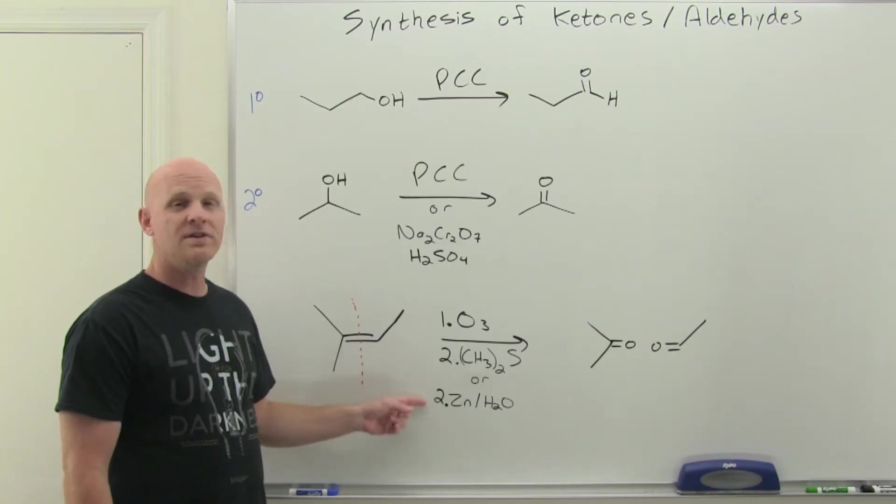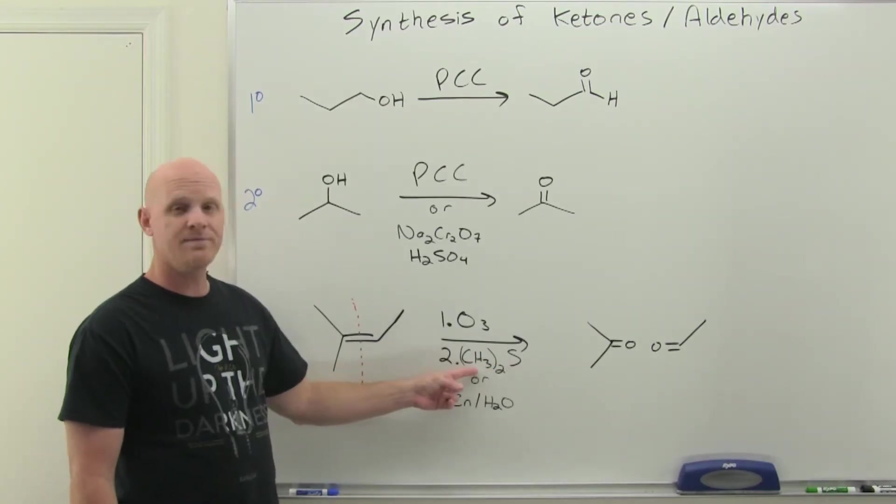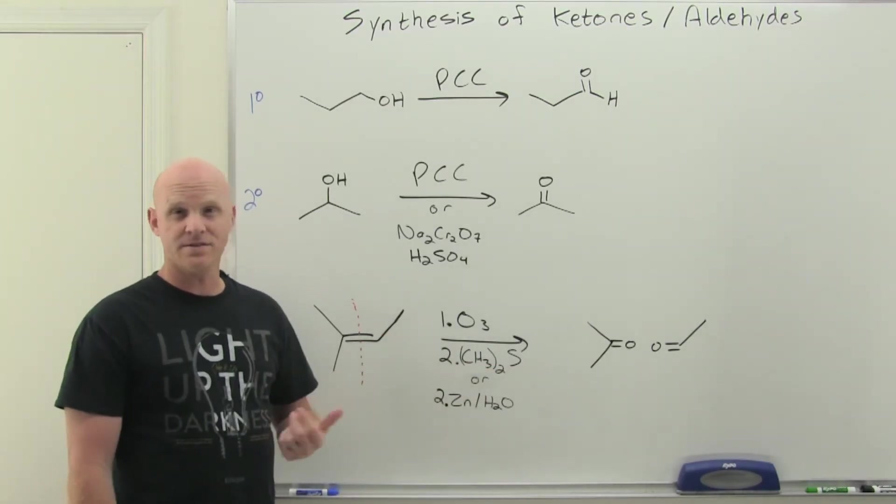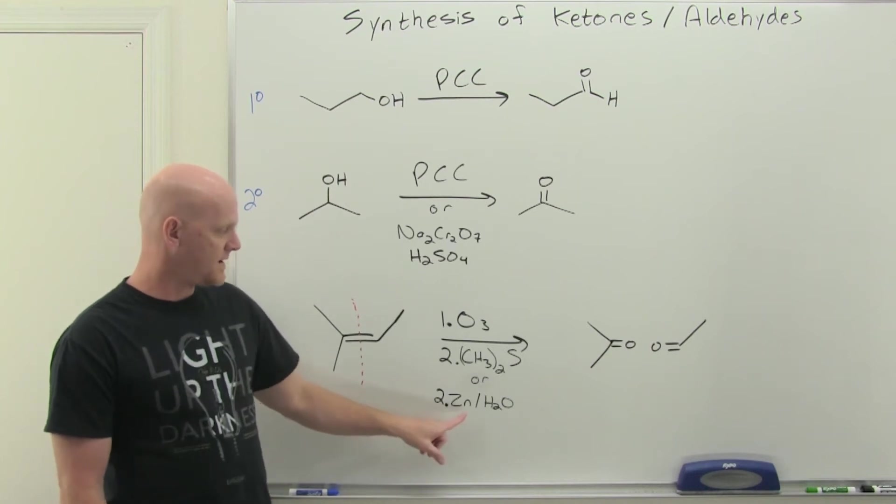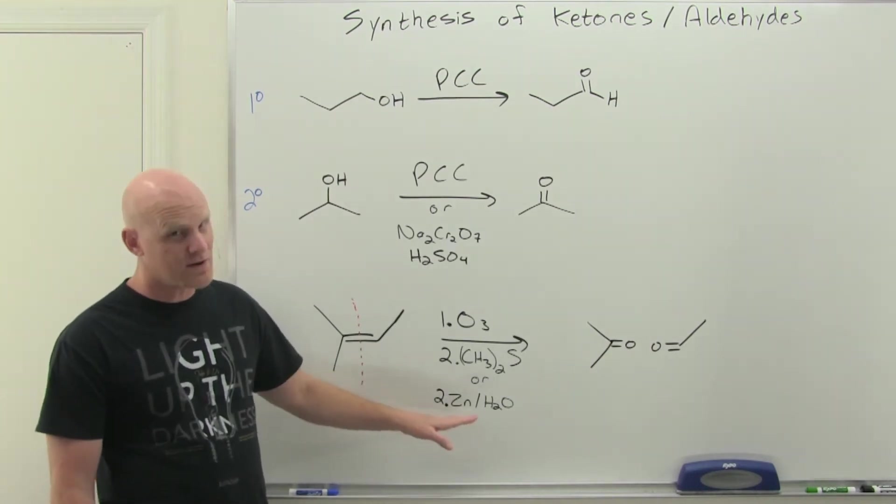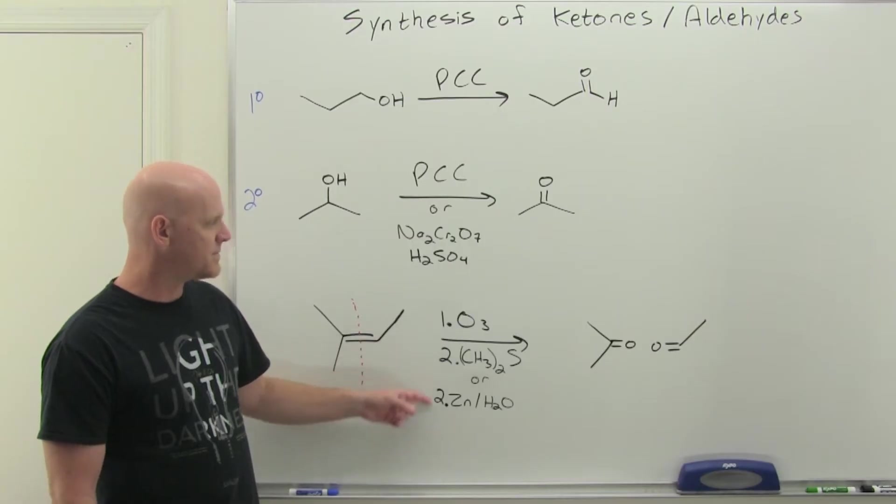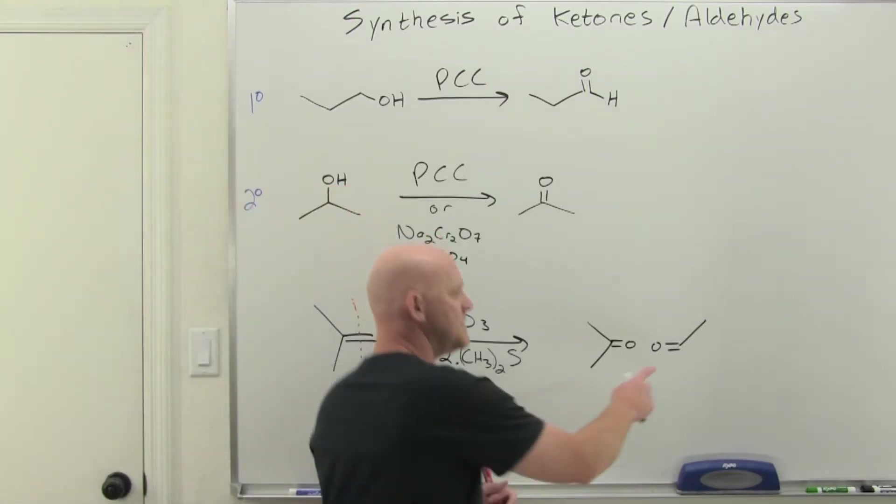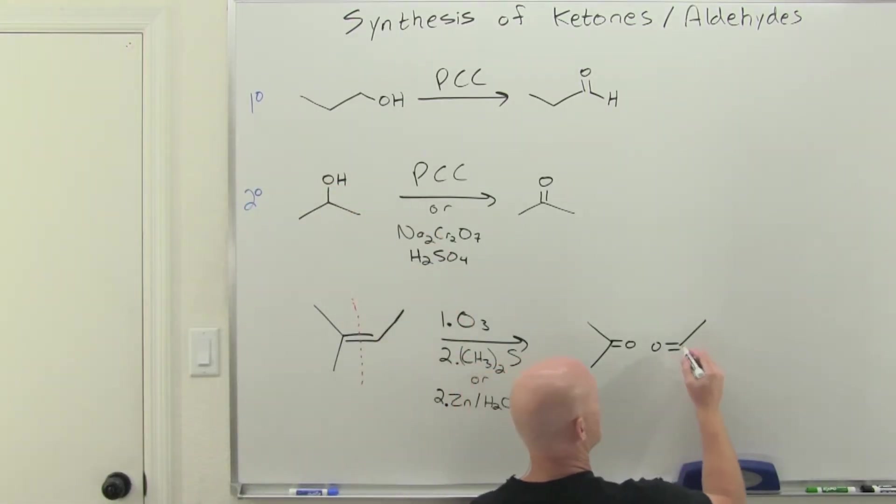But if we use a reducing agent like either dimethyl sulfide, which might be written as just simply DMS with an abbreviation, or with a metal like zinc and water - and I say like zinc, you're probably only going to see it with zinc - but either one of these would be an appropriate reducing agent, and it will keep the aldehyde we have formed here an aldehyde.